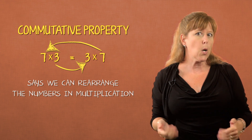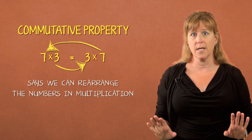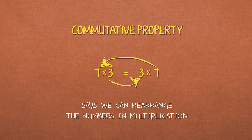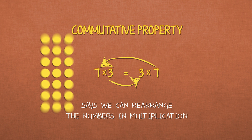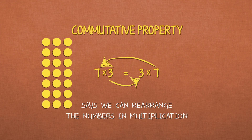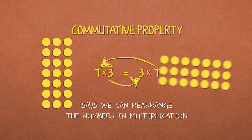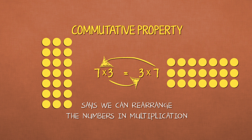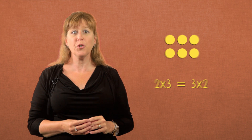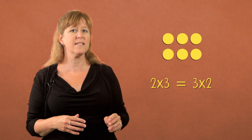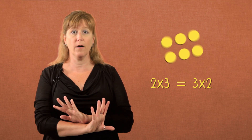The commutative property tells us we can rearrange the numbers in multiplication. If your problem is 7 times 3, you could make that 7 rows of 3, or you could make it 3 rows of 7. They will both equal the same answer: 21. So based on the commutative property, 2 rows of 3 is the same as 3 rows of 2.